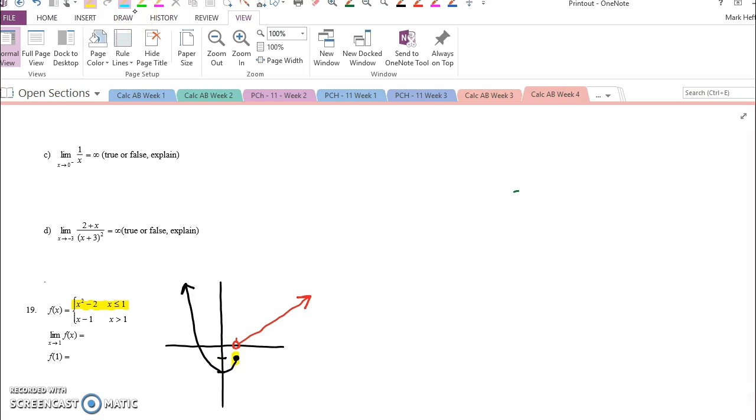And we are a line when x is greater than 1. That's why we have an open circle right at 1. So hopefully you can see from the picture that the limit must not exist.